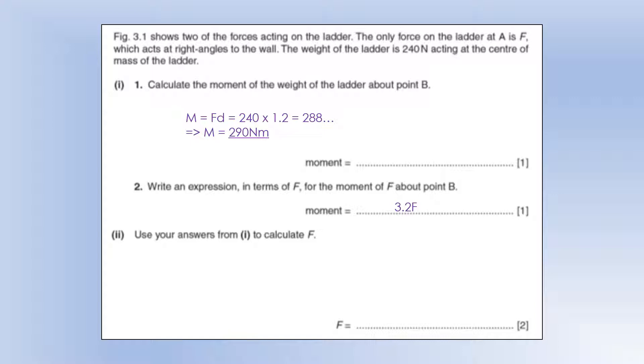So we know these two moments must be equal to each other, as they are the only forces. So we can say 3.2F must be equal to 2.88, and therefore we can solve what F is. It's 90 N pushing across to the right. So actually this tells us there must be a frictional force at B acting to the left to counteract this.